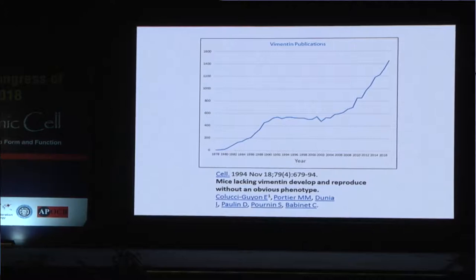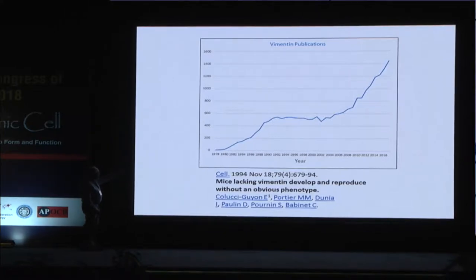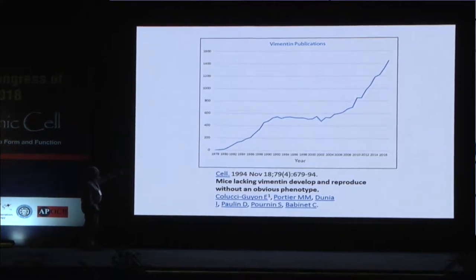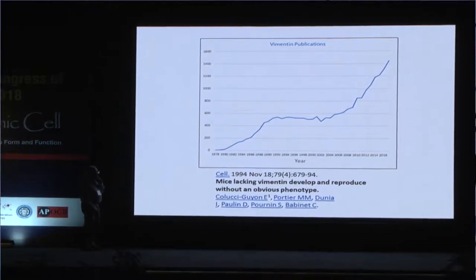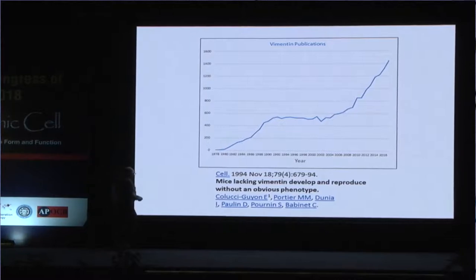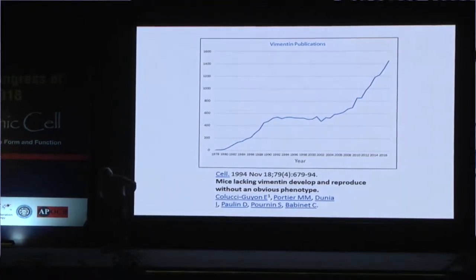From the time I started in the early 1970s — when we called the protein 'intermediate filament protein' or '10-nanometer diameter filament protein' — we now know it's called vimentin, a name established around 1978–79. If you look at the number of papers that have appeared over the years, you'll see that there's a plateau but the field has gone way up, so that in 2016 there were over 1,400 papers published on vimentin.